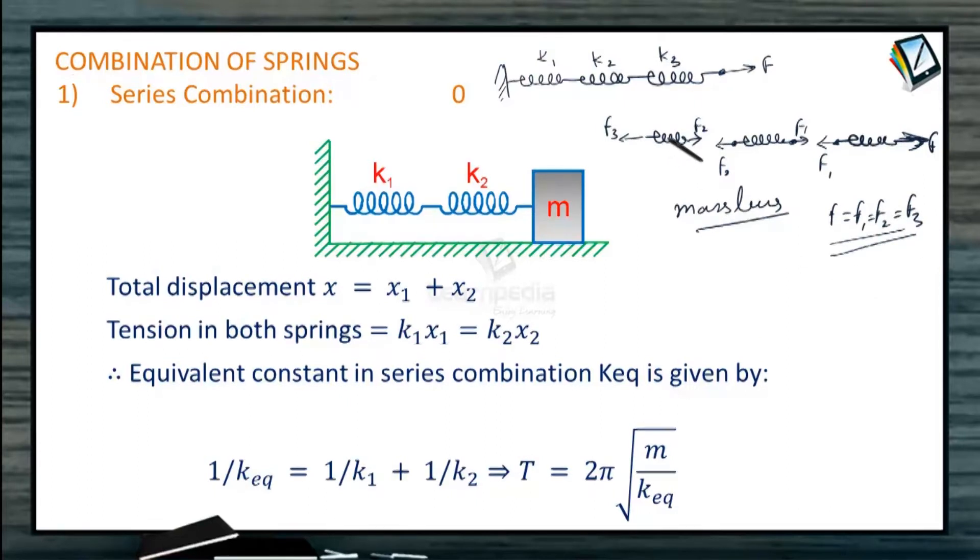So elongation of the springs will be according to individual spring constant. So total elongation X is going to be X1 plus X2 plus X3. So X is equal to X1. X1 is F upon K1. X2 is F upon K2 because same force is acting on all the springs.